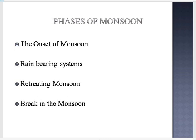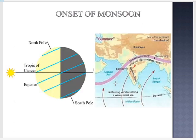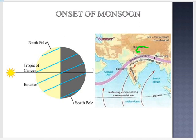During summer, the sun rays are vertical over the Tropic of Cancer. As a result of this intense heat, the ITCZ — which is located near the equator — tends to ascend northward to the north of the Himalayas. The Tibetan Plateau, located beyond the Himalayas, due to the heat from the ITCZ, develops low pressure on the surface.